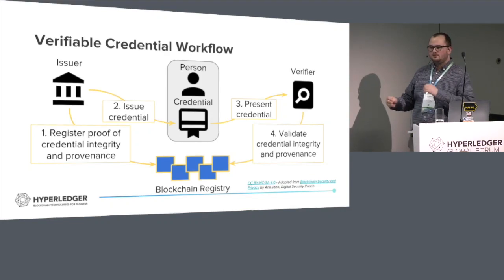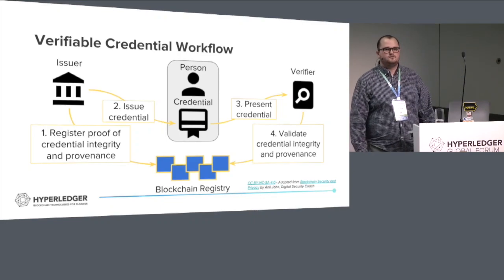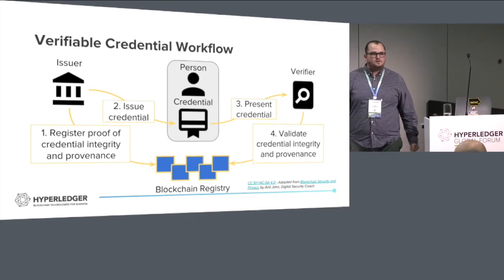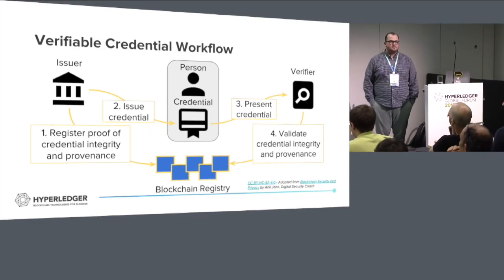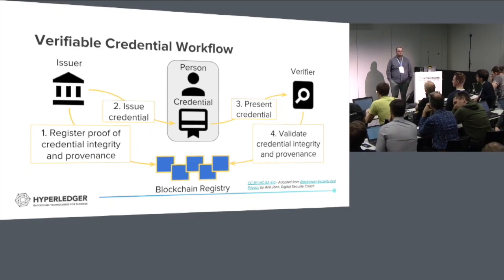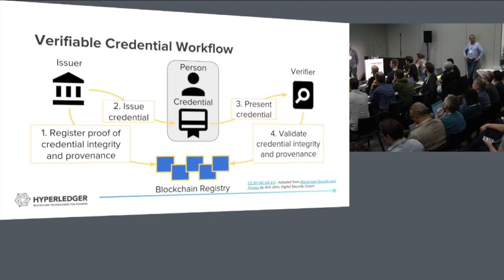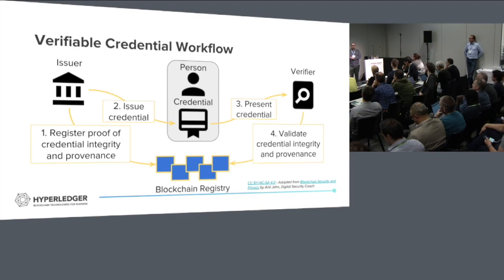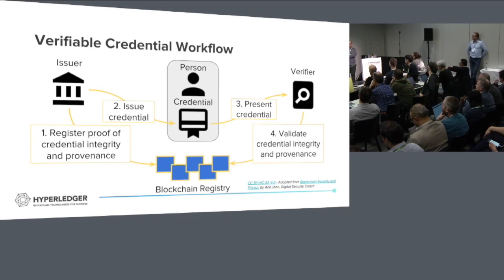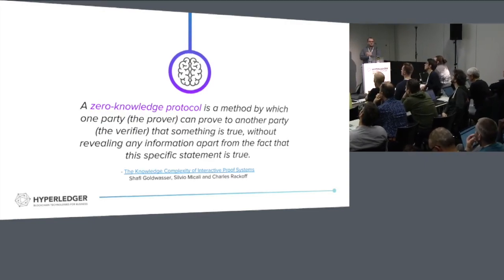In the case of a liquor store checking your ID: when you present credentials, the store will still have your name, photo, and date of birth if they request it and you choose to give it. However, we have capabilities to say they don't even need that - they just need to know the government issued it and that I have a driver's license proving I'm over 21. That's actually the perfect segue to zero-knowledge proofs.